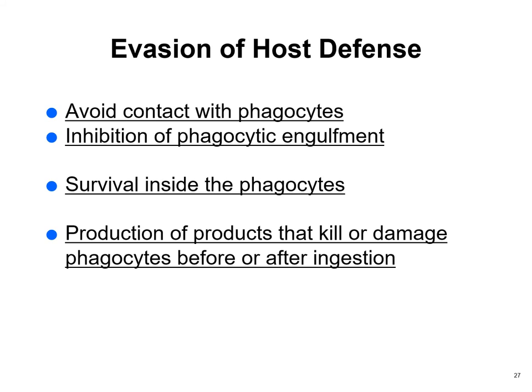Evasion of host defense is what organisms do to escape the immune response. Some avoid contact with phagocytes or inhibit phagocytes from engulfing them. Envelope viruses — the wolf in sheep's clothing — coat themselves in host tissue so phagocytes don't recognize them. In some cases phagocytes eat the organism and it doesn't die — that's a scary organism. Others produce products that kill or damage phagocytes.